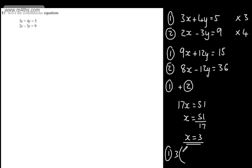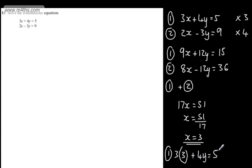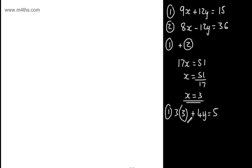I'm going to have 3 lots of x, which is 3 lots of 3, plus 4y is equal to 5. 3 times 3 is 9, so I'm going to subtract 9 from both sides of the equation. So we'll have 4y is 5 minus 9, which is minus 4.